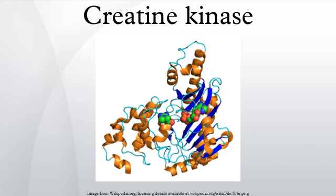CK is often determined routinely in a medical laboratory. It is also determined specifically in patients with chest pain or if acute renal failure is suspected. Normal values are usually between 60 and 174 IU/L, where one unit is enzyme activity — more specifically, the amount of enzyme that will catalyze 1 µmol of substrate per minute under specified conditions. This test is not specific for the type of CK that is elevated.